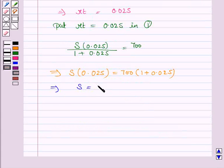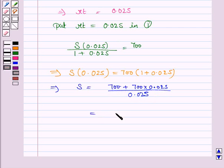So S is equal to 700 plus 700 into 0.025 divided by 0.025, which is equal to 717.5 divided by 0.025.